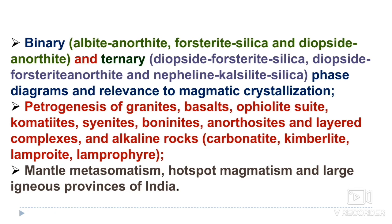You will likely get one question from phase diagrams — albite-anorthite, forsterite-silica, diopside-forsterite-anorthite, and nepheline-calcium-silica diagrams — and their relevance to magmatic crystallization. Petrogenesis of granite, basalt, ophiolite suites, komatiite, boninites, anorthosites, and layered complexes, and alkaline rocks such as carbonatites, kimberlites, and lamprophyres are important. You will likely get a question from carbonatites, kimberlites, and lamprophyres. Mantle metasomatism, hotspot magmatism, and large igneous provinces (LIP) of India are also important.